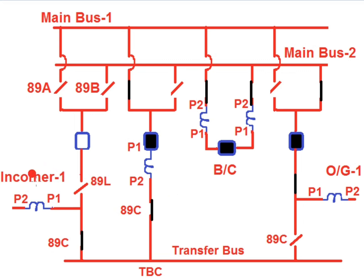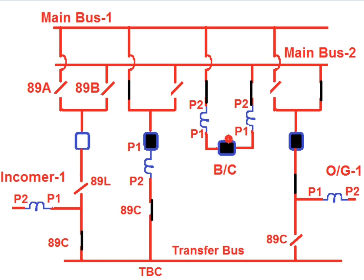Consider that incomer 1 has been diverted to the TBC bay towards main bus 1, with power flowing from incomer 1 towards main bus 1. The bus coupler bay is closed and outgoing feeder 1 is taking power through main bus 2. For this configuration: isolator 89C of incomer 1 is closed; for the TBC bay, 89A and 89C are closed with the circuit breaker closed; for outgoing feeder 1, 89B and 89L are closed; and for the bus coupler bay, 89A, 89B, and the circuit breaker are closed.